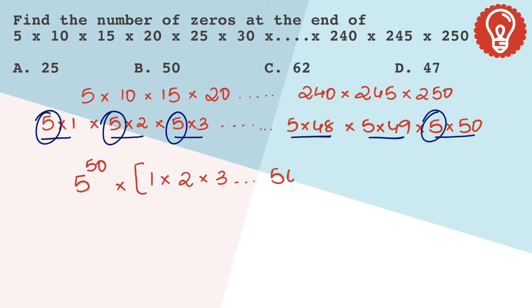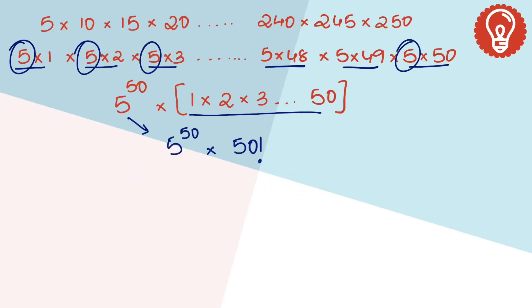Now let's keep 5^50 as it is, but 1 till 50 we can write it as 50 factorial. Because we need to find the number of zeros, we need to know how many 2s and 5s are there in 50 factorial.